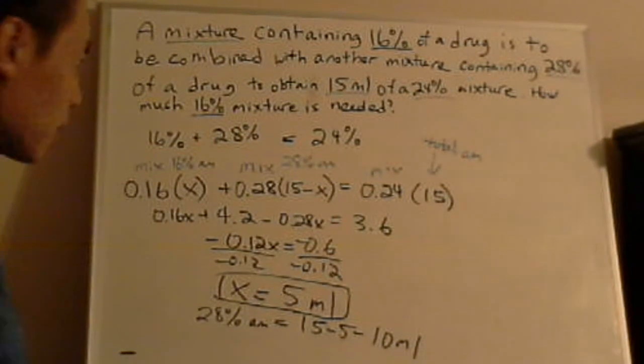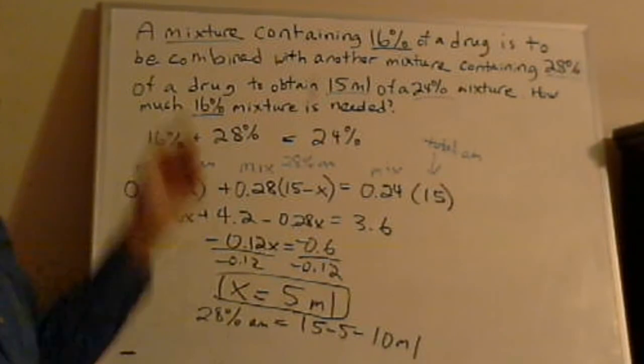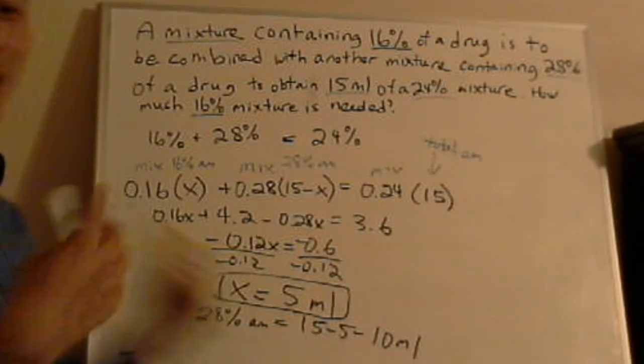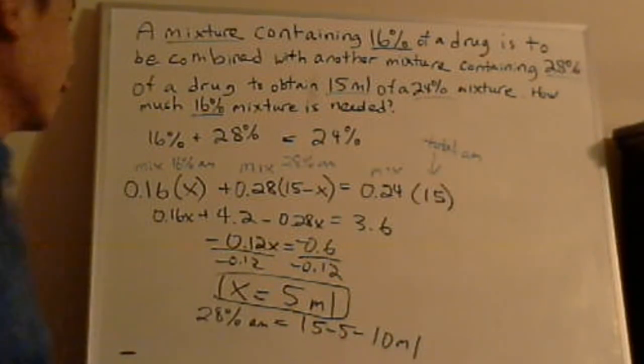There's a lot of mixture problems that are similar to this. Sometimes it's a liquid. Sometimes they ask about salinity. My favorite is always the green tea and lemonade problems. How to make Arnold Palmer. So to me, that's the best mixture problems in the world. So anyways, just ask me many questions.